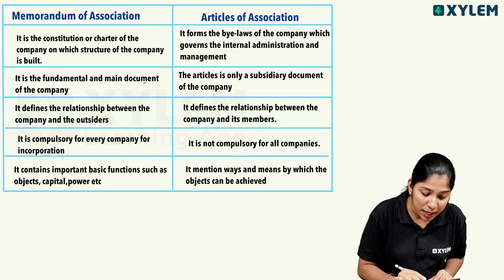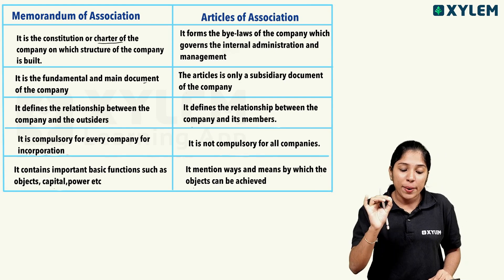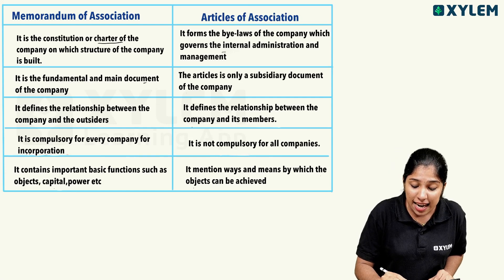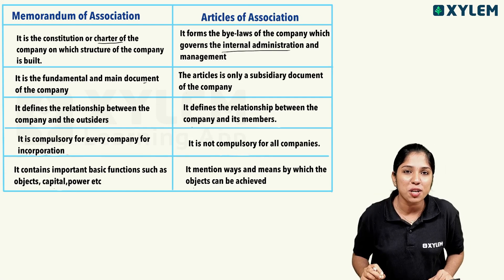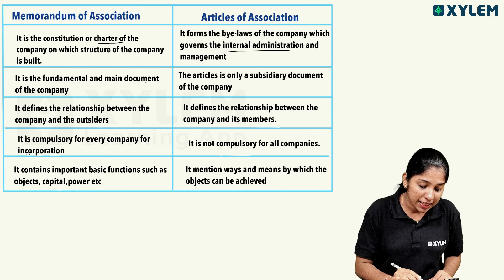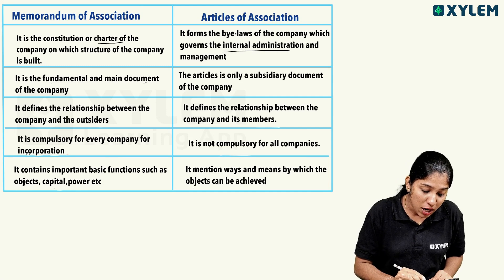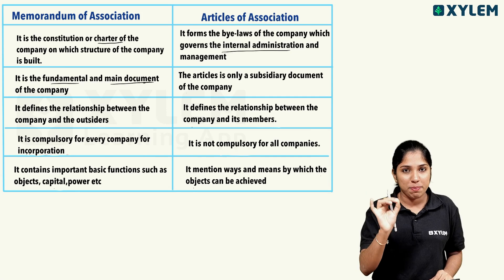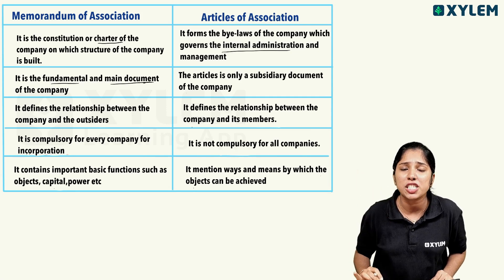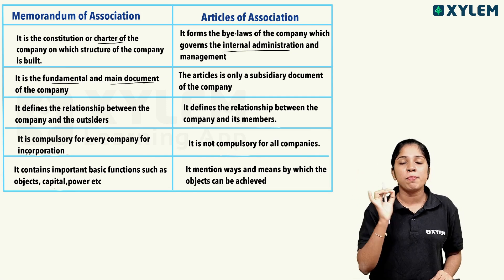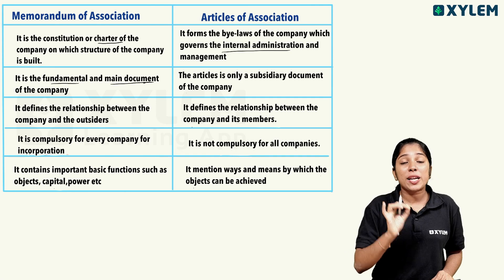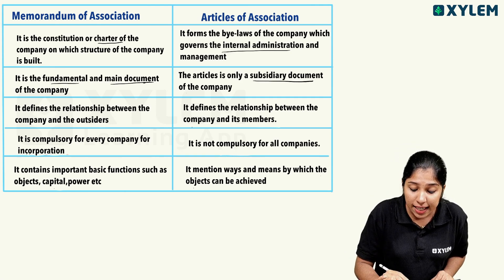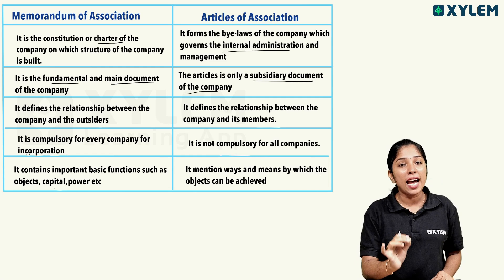The Memorandum of Association is a fundamental and main document of the company. The Articles of Association, on the other hand, is an internal administration document governed internally. So the Memorandum of Association is a fundamental and main document, while the Articles of Association is only a subsidiary document of the company.